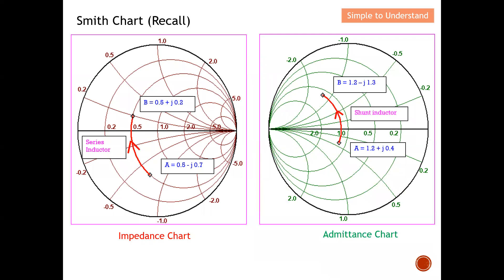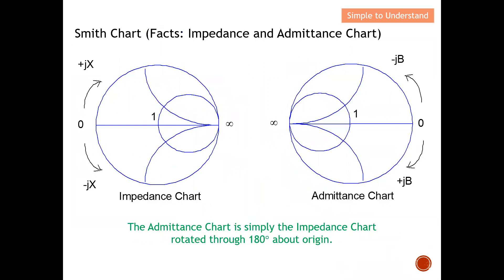I also want to mention some facts about impedance and admittance charts. For the impedance chart — as discussed in Part 3 — the resistivity line divides the chart: plus j means above the line, and minus j means below the line. For the admittance chart, it is totally different and reversed: minus j is above the resistivity line, and plus j is below the resistivity line. This is the key distinction between impedance and admittance charts.